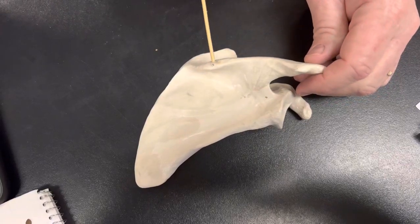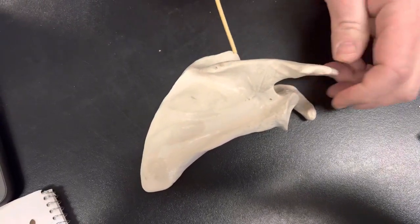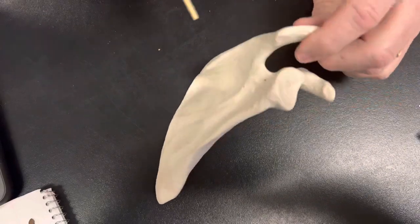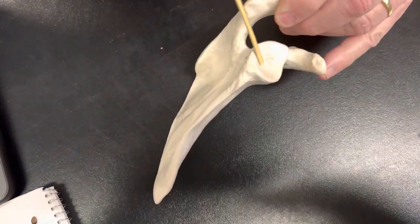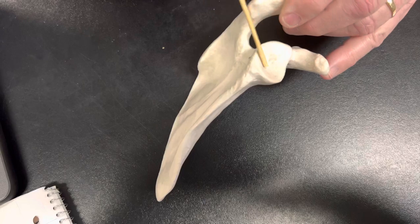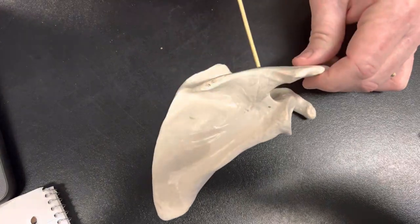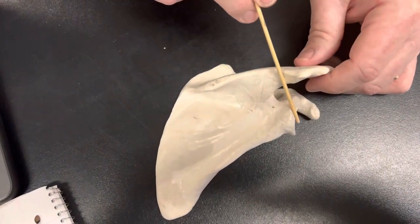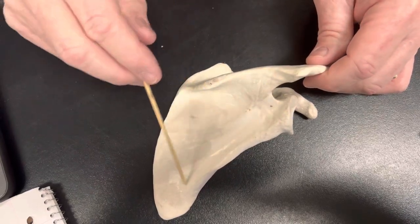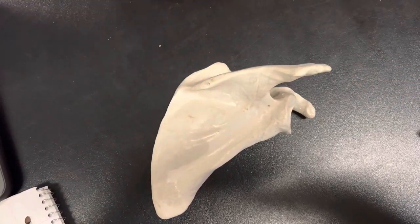This is called the scapula spine that's right here and the scapula spine is always going to be posterior. And then I have my glenoid cavity that's right here. The glenoid cavity always has to face lateral. So if this is posterior and this is lateral, this is going to be my right scapula here. That's the only way this will work.